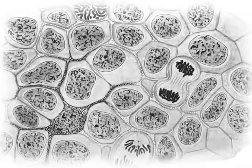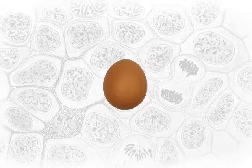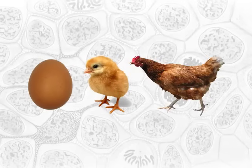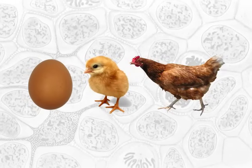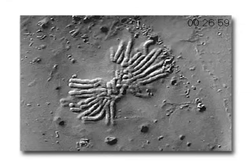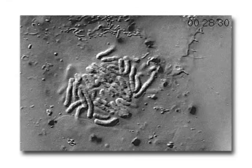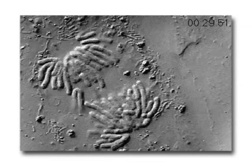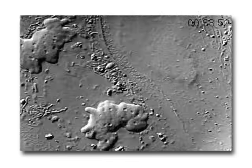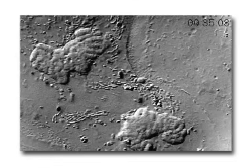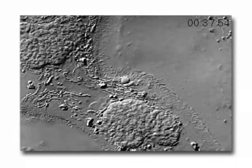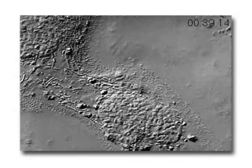Cell division is required for an organism to grow, mature, and maintain tissues. During the mitotic phase, a cell will undergo mitosis to form two new nuclei, and then divide to form two new individual cells during cytokinesis.